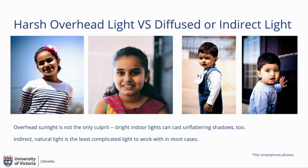Many people think that bright sunny days are the best for photos because they love sunny days, but a good mood doesn't always equal good photos. Harsh overhead light can cause a lot of problems — not just because of squinting, but because of strong shadows. Bright sunlight can also reflect off plants and objects, leaving landscape photos looking pale and washed out. This is why things can look more colorful in photos on an overcast day.